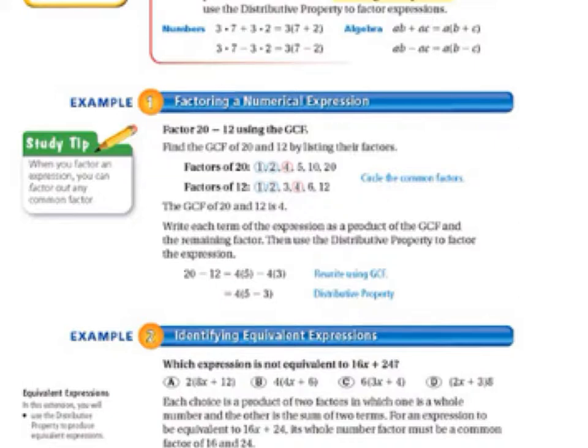Our directions are factor 20 minus 12 using the GCF, the greatest common factor. Find the GCF of 20 and 12 by listing their factors. We could also use the prime factorization. When we find the greatest common factor of 20 and 12, we learn that it is 4.